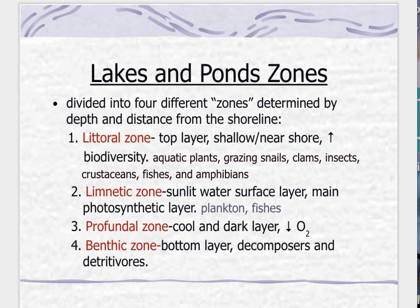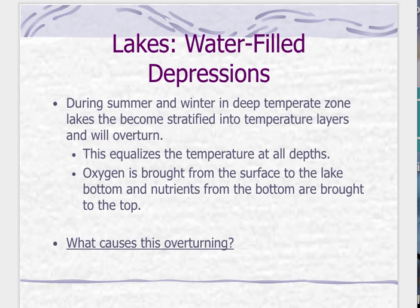When we look at freshwater ecosystems, you want to make sure you understand the different types of ecological and economical services. One thing to remember with the different zones is that we have stratification. During the summer and winter months, temperatures in the lake are stratified and they start moving — this equalizes the temperature at the depths. Oxygen is brought from the surface to the lake bottom, and nutrients from the bottom are brought to the top. We need to figure out what causes this overturning — you'll find the answer in the next lecture.